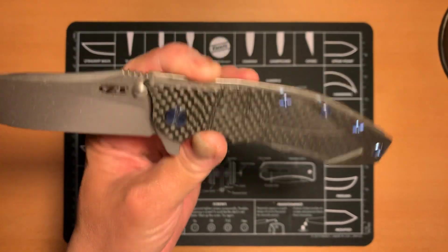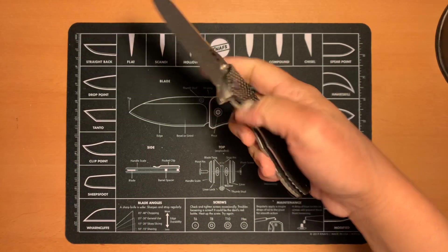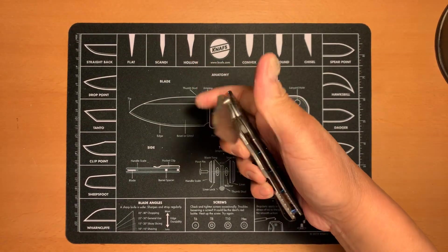So, it's got a really great drop point blade. The knife is a fantastic slicer. The ergos are great. Let's take a little closer look at the knife.